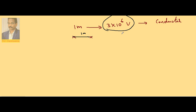So when I take 1 meter separation, it is 3 × 10⁶ volts. Suppose if I take 1 centimeter, it is 3 × 10⁴, or 30,000 volts. So if two points are separated by 1 centimeter with a potential difference of 30,000 volts, then automatically air between them becomes a conductor. At low pressure and high potential differences, insulators or gases behave like conductors.